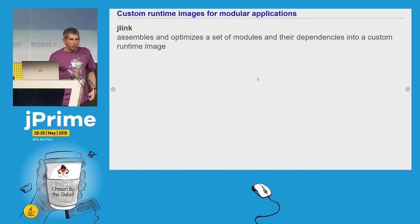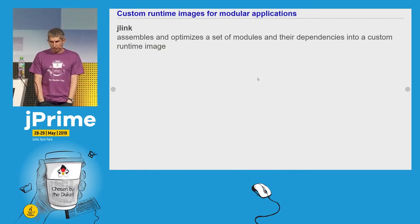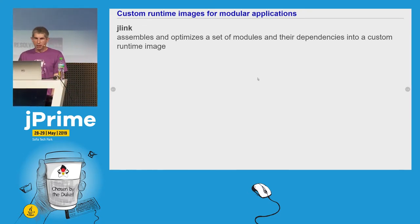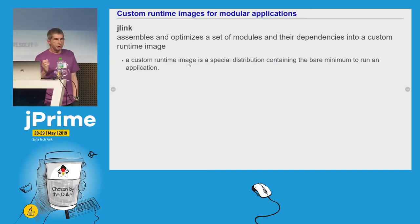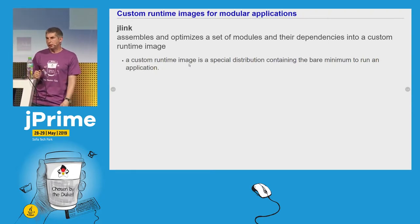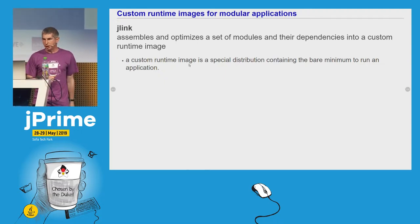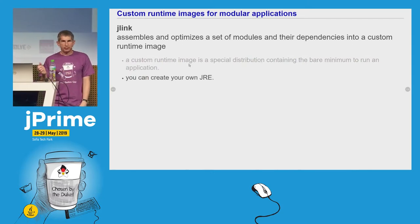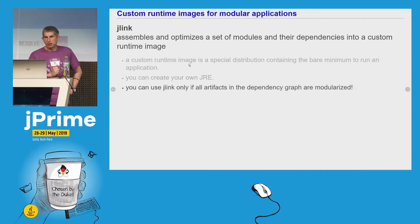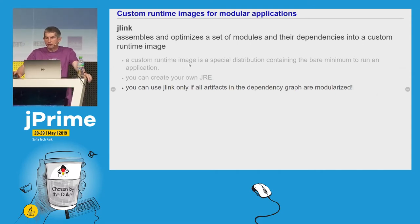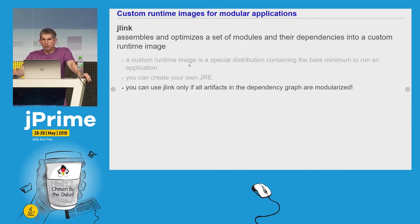Now let's discuss another possible use case. When you have a modularized application, you may want to create a custom runtime image for it. We can do this using the jlink tool, which has been introduced in Java 9. A custom runtime image is a distribution containing only the modules required by your application, so it is a smaller distribution than one containing all modules in the JDK. But the jlink tool has a limitation: it only works if all artifacts in the dependency graph are modularized. And this is a strong limitation because most of the time your application will have some non-modularized artifacts in its dependency graph.